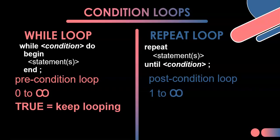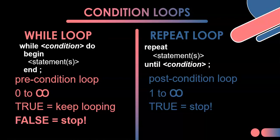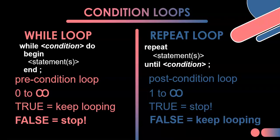In a while loop, if the condition is true, we keep doing the loop. 'While this condition is true, keep doing this' — it makes sense in plain English. But with a repeat loop, 'repeat doing this until the condition is true' means when the condition is true in a repeat loop, you stop. So these two loops have almost the exact opposite type of condition. When a while loop's condition is false, stop the loop. When a repeat loop's condition is false, keep looping — because when it becomes true, that's when we stop.